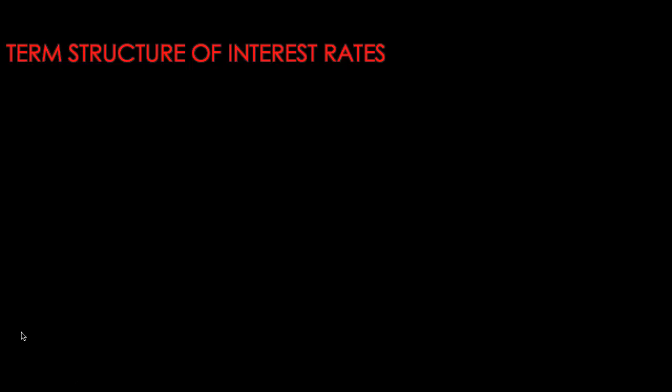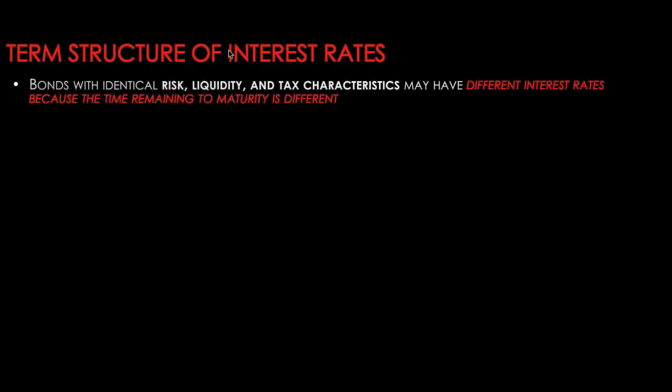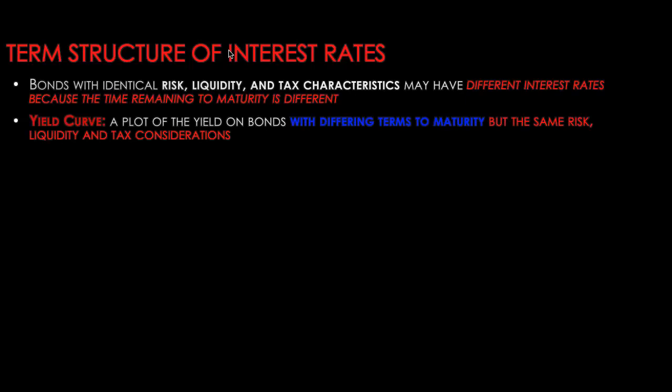Welcome back. Last time we saw how risk, liquidity, and tax considerations can influence interest rates — the risk structure of interest rates. Bonds with identical risk, liquidity, and tax considerations may have very different interest rates, and this difference arises because of differences in their term to maturity. We can plot the yield of bonds with varying maturities on a diagram, and we call this plot the yield curve.